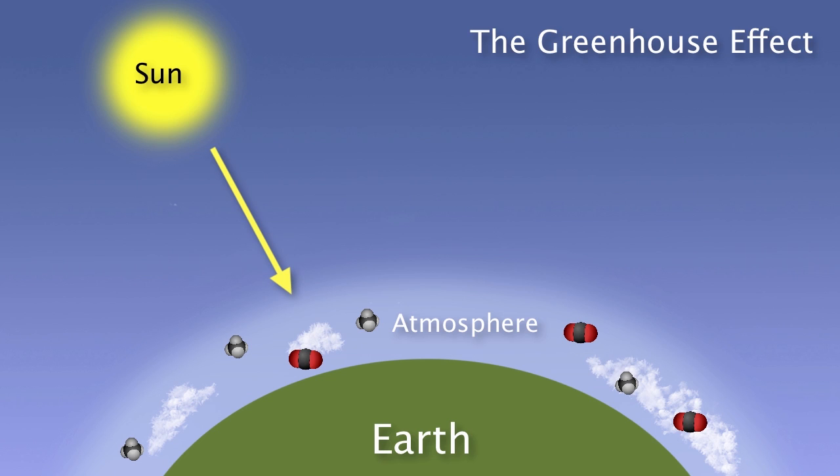In fact, if our atmosphere had fewer greenhouse gases, the majority of the water on the planet would exist as ice.